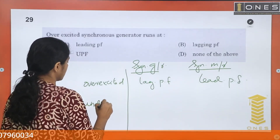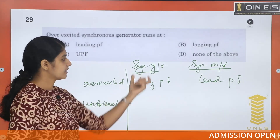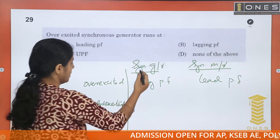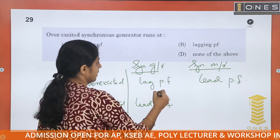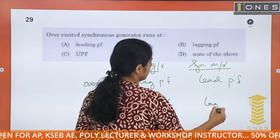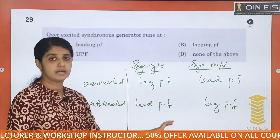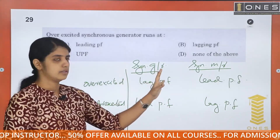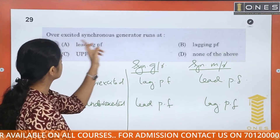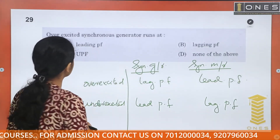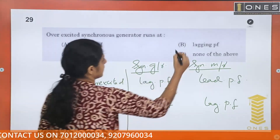For under-excited cases: under-excited synchronous generator gives leading power factor, and under-excited synchronous motor gives lagging power factor. So for this question, over-excited synchronous generator runs at lagging power factor.